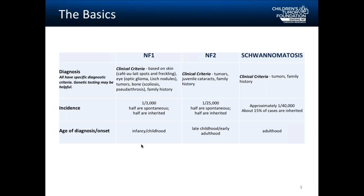First, we're going to take a look at the basics — the most basic differences between the three types of NF, starting with how a diagnosis is made. In NF1, we have specific diagnostic criteria. NF1 is generally a clinical diagnosis, meaning it's made based on what the doctor sees when they look at a patient. This can be based on skin findings like cafe au lait spots and freckling, eye findings that include optic gliomas, benign tumors that can grow on the nerve behind the eye, Lisch nodules which are like freckles in the colored part of the eye, as well as various types of tumors, bone deformities, or a family history of NF1.